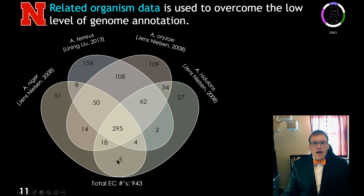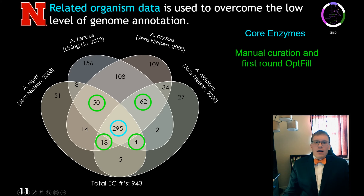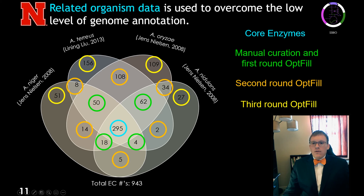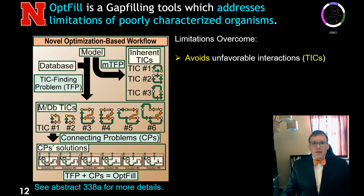We looked at the overlap in enzyme commission numbers contained in the four Aspergillus models. We noticed about 300 core enzymes, which we added directly to our reaction list because they are consensus to all four Aspergillus models. Enzymes present in three of four were used in the first round of manual curation and our gap-filling algorithm OpFill. Those common to two of four were used in the second round, and those common to one of four in the third round. We pruned these databases to reduce thermodynamically infeasible cycles for computational tractability.